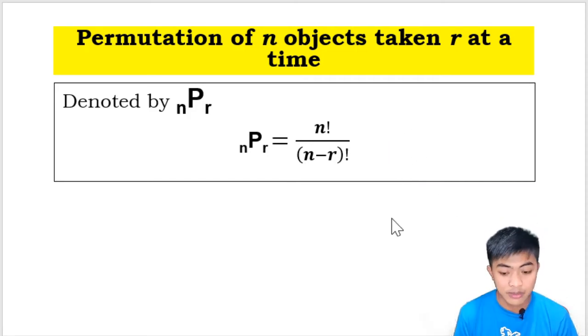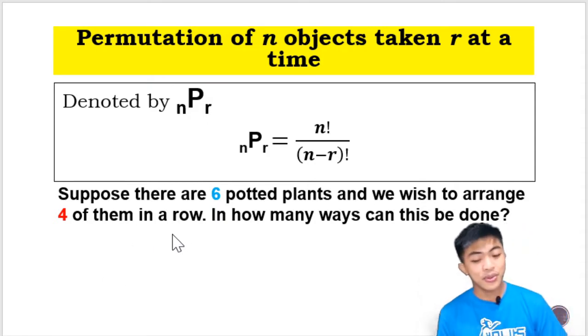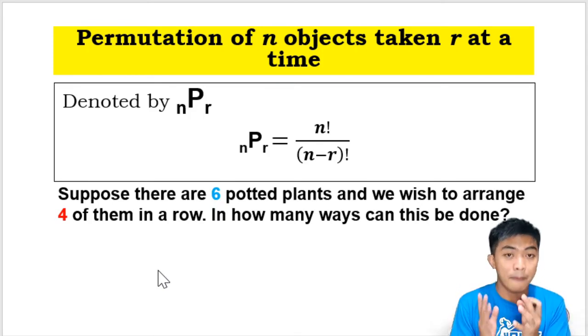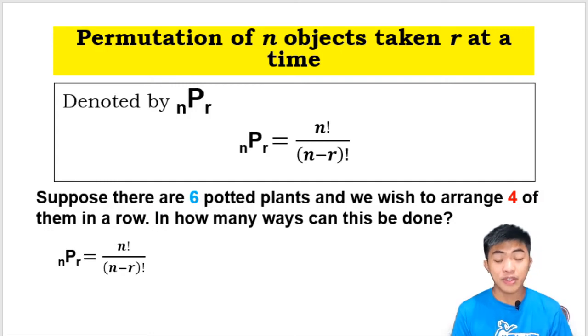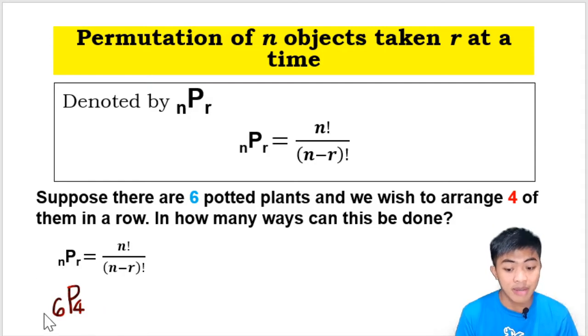Let's try to answer some problems regarding this one. Suppose there are 6 potted plants and we wish to arrange 4 of them in a row. In how many ways can this be done? May 6 pots and then we are going to arrange these 4 pots in a row. So kukuha tayo from those 6 pots ng 4. If we are going to follow the formula, it will look like this: 6 permutation 4.